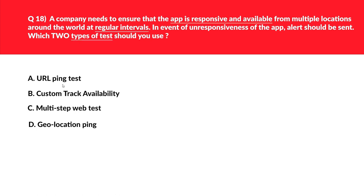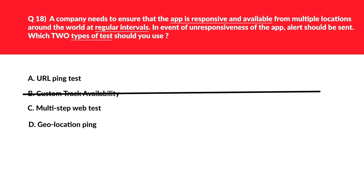This question is related to availability tests. Option A, URL ping test, is a basic test required to monitor the availability of the application, so we park this as one potential answer. We need two correct answers. Option B, custom track availability test, is used when you need a custom application to run an availability test and send results to Application Insights. Since there's no mention of a custom application, we reject it.